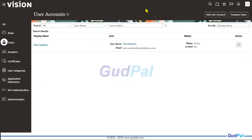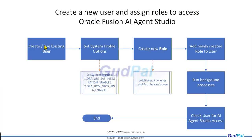Going back to the presentation for a quick recap: we created a new user, checked and confirmed both system profile options were set to Yes, created a new custom role with the required roles, privileges, and permission groups, and assigned that role to the user. Now we need to run certain background processes and then check AI Agent Studio access from the front end.